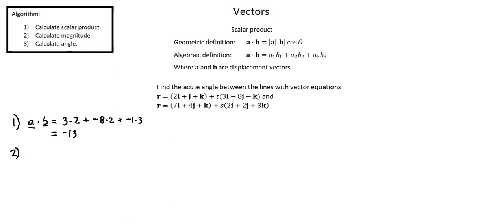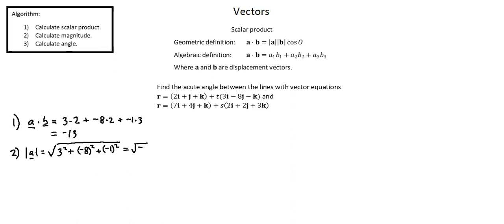Step 2: calculate magnitude. Starting with the magnitude of vector A, we want the square root of the sum of the squares of the x, y, and z components. Working with the direction vector of equation 1, we have x = 3, so 3 squared, plus y = negative 8 squared, plus z = negative 1 squared. This simplifies to the square root of 74.